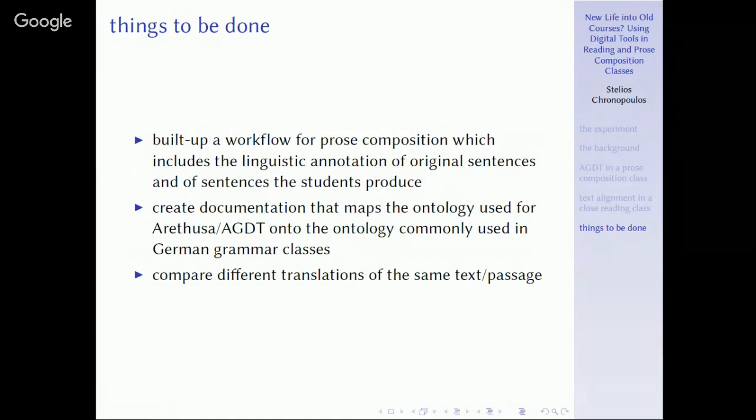Some things to be done and I close here. First of all, I am extremely interested and I think I will pursue that to build up a workflow for prose composition, which includes the linguistic annotation of original sentences and of sentences the students produce. So let them read, close read as Mambrini has proposed and other people are doing. Read them through close reading original sentences and then annotate also through the tree banking tool their own sentences and eventually also compare them. Create a documentation that maps the ontology used for Arethusa onto the ontology commonly used in German grammar classes and of course compare different translations also in different languages of the same text passage.